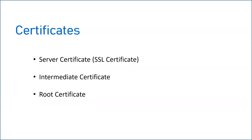That means when you are going for an SSL configuration, you need three certificates. One is the server certificate, also called the SSL certificate, which contains your identity, your organization identity, and the public key. Second is the intermediate certificate, and third is the root certificate. This is the extra layer of security provided by the certificate providers, and it also contains the authenticity of the third-party CA providers, which creates trust for the end users who are going to access your website.